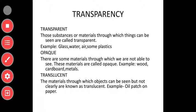There are some materials through which we are not able to see — these are called opaque. Examples: wood, cardboard, and metals. For instance, a wooden door — you cannot see the other side until you open it. Similarly, a book's cardboard binding or a metal sheet on a window would prevent you from seeing through. Such things are called opaque.